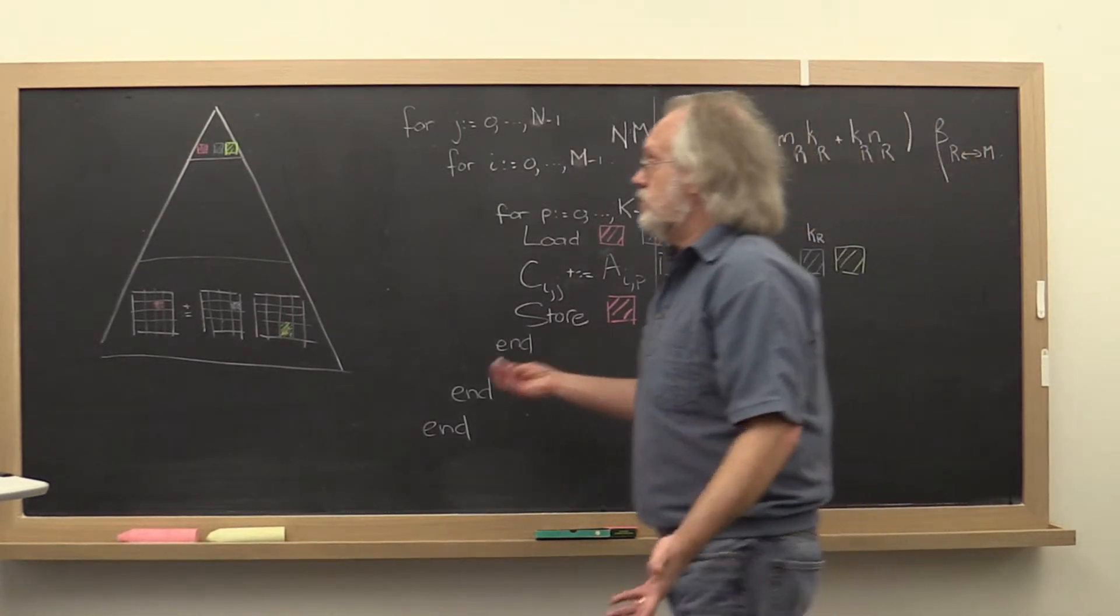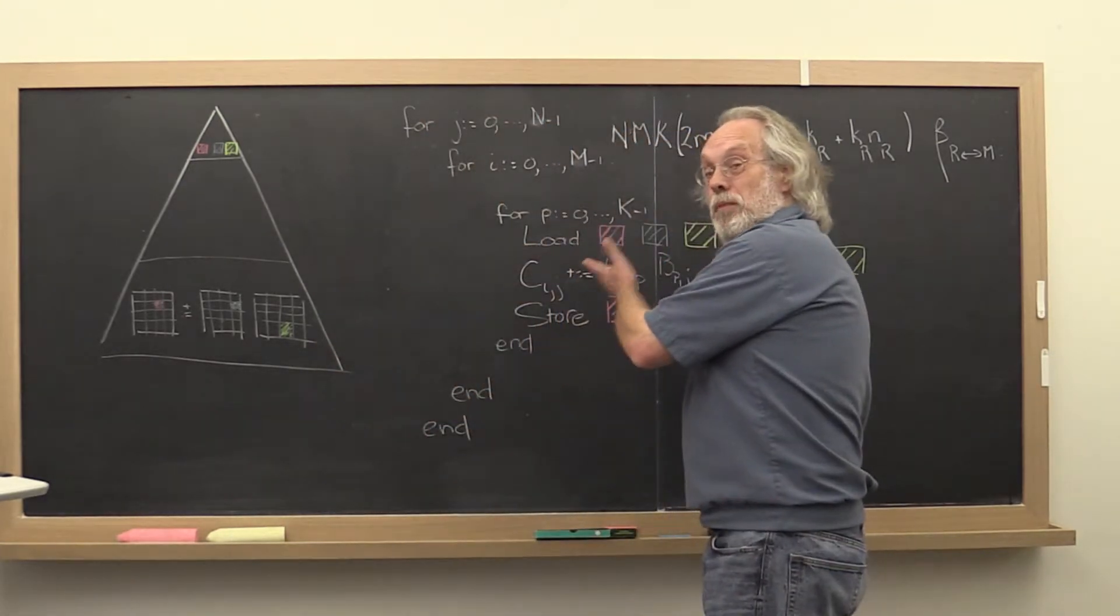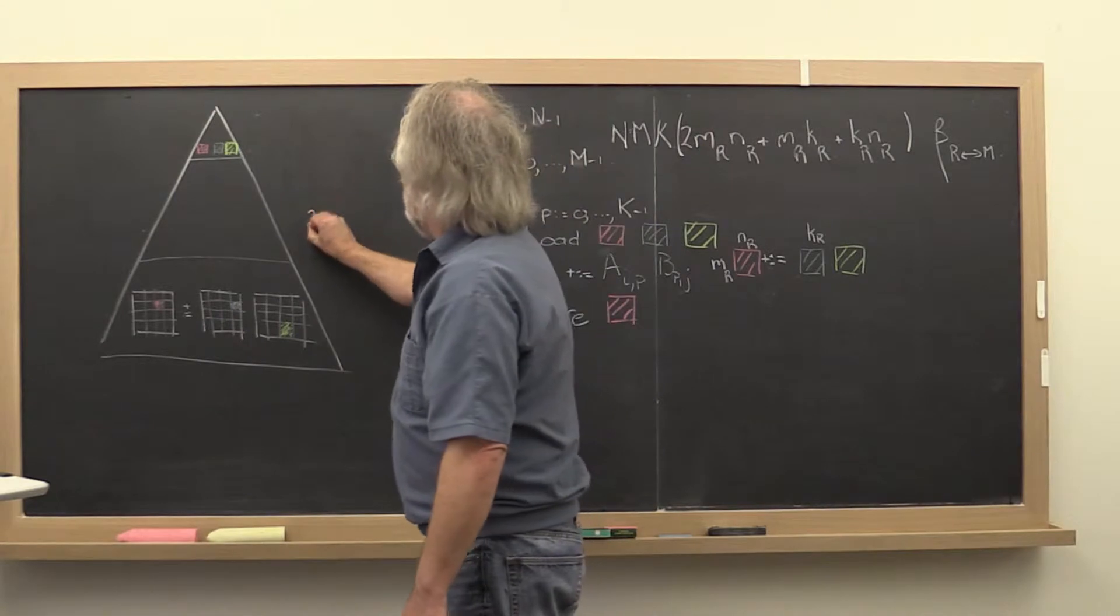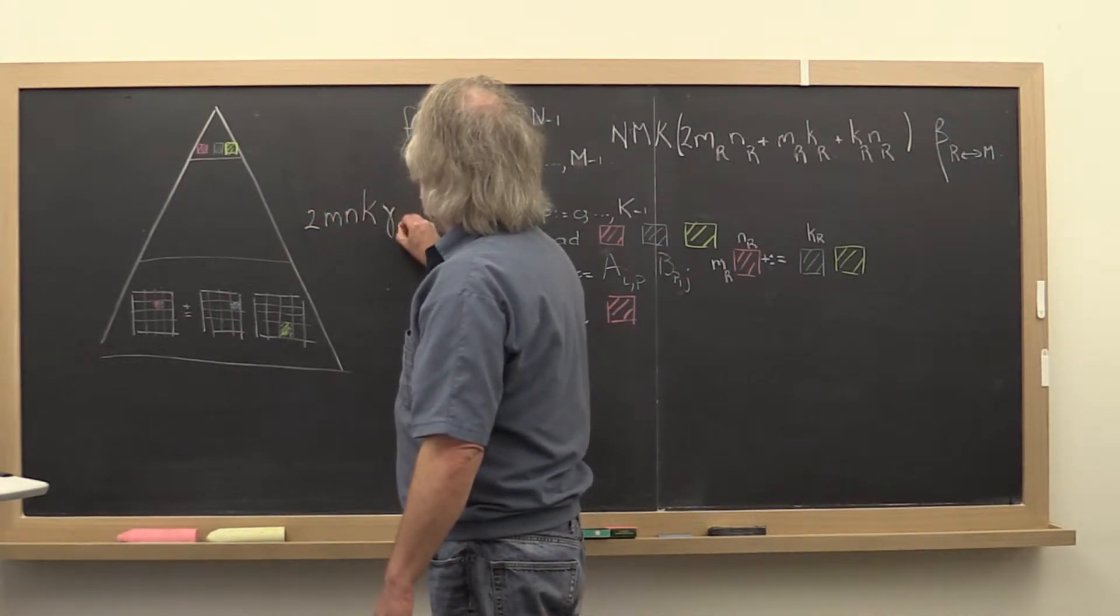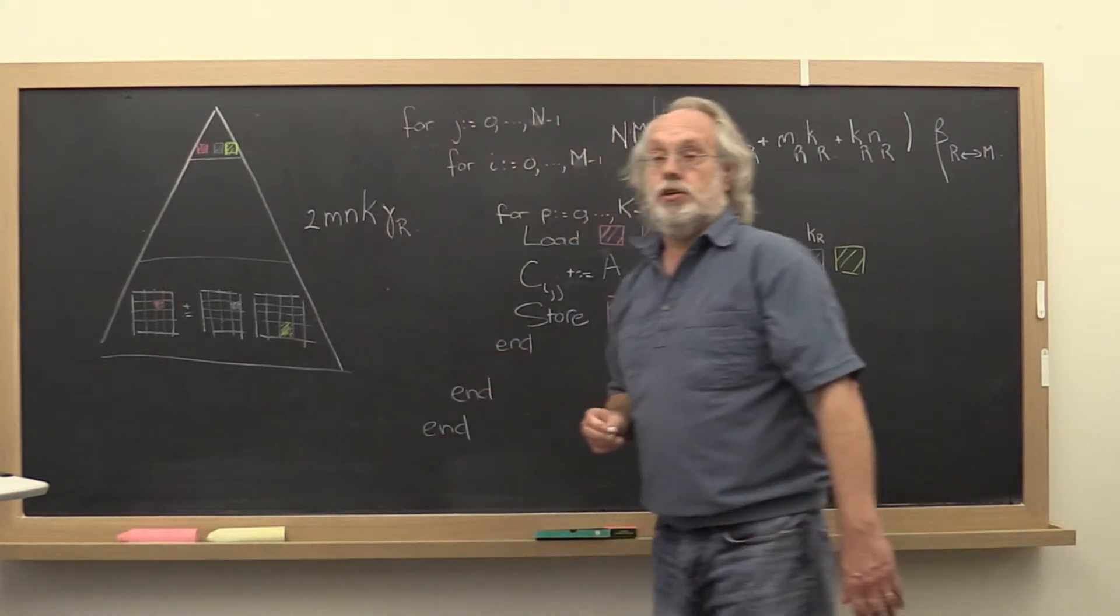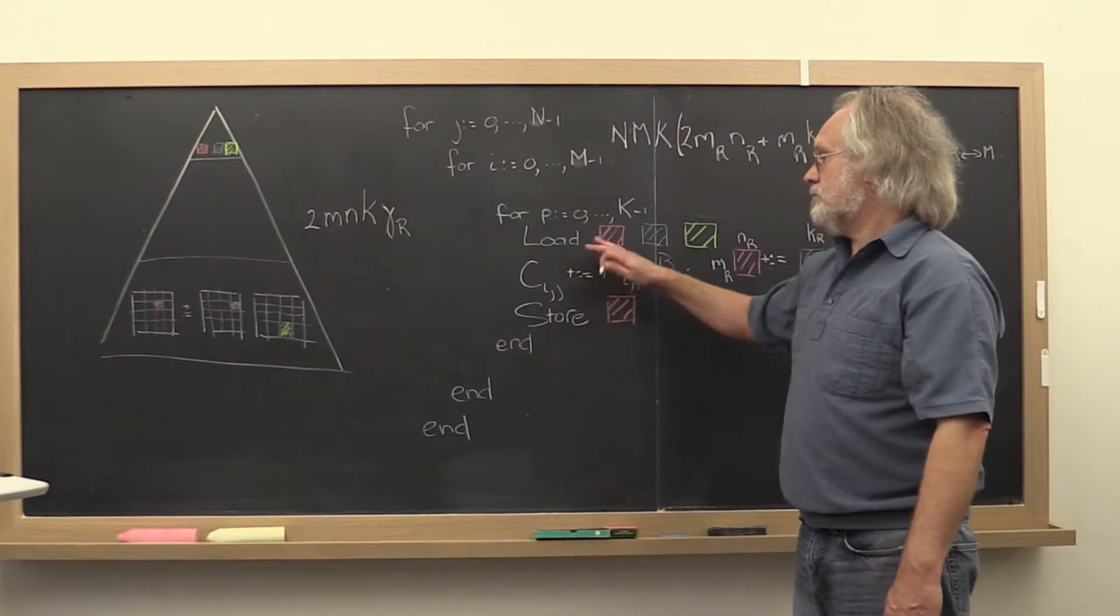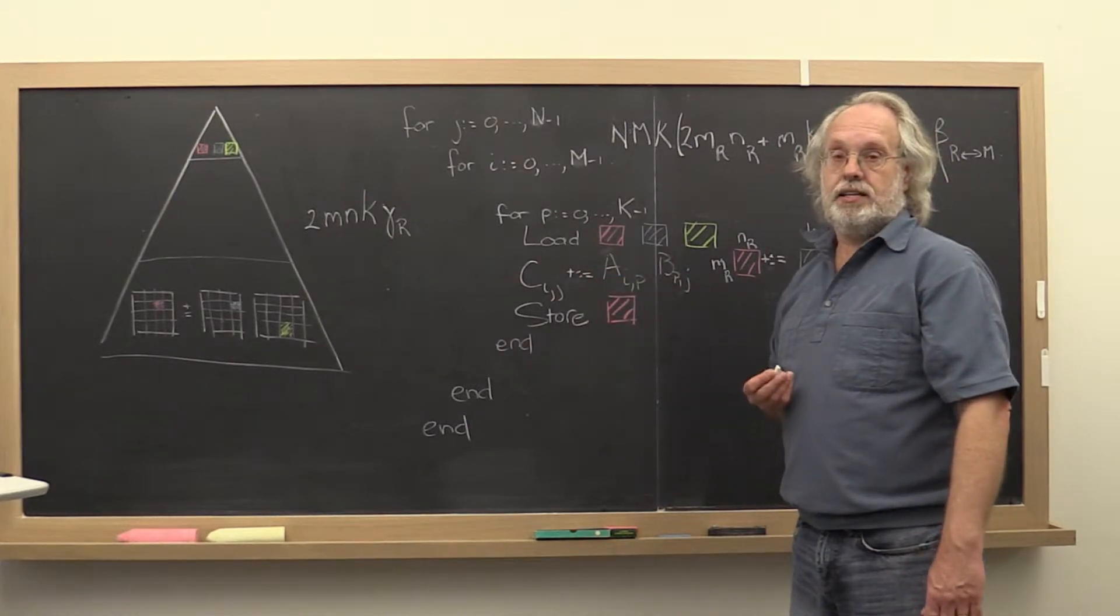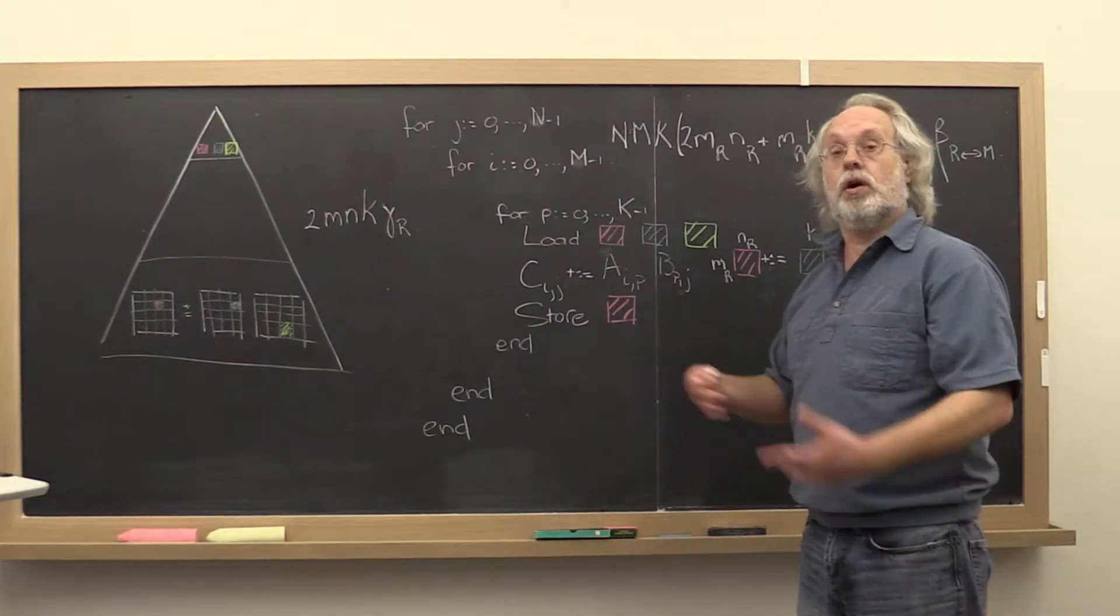And therefore we know that the total cost of the time spent in actually multiplying is still going to be 2 times m times n times k times the time it takes to do a floating-point operation. So we don't need to spend too much time analyzing that. Although in the notes you will find all of the formulas that will walk you through all of that.